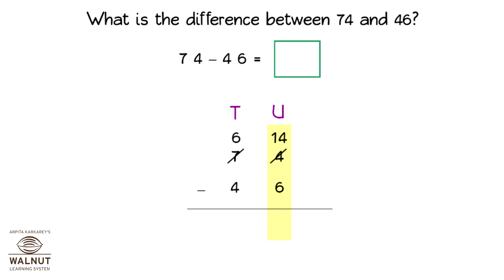Now, we can subtract. We can subtract the units and then we subtract the tens. So, 74 minus 46 is equal to 28.